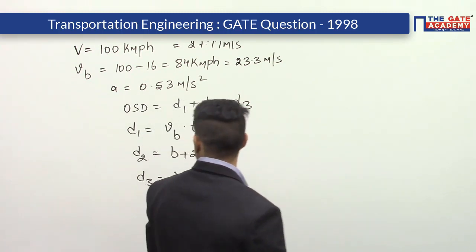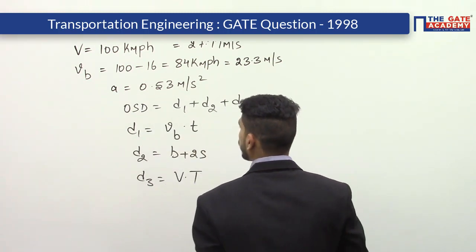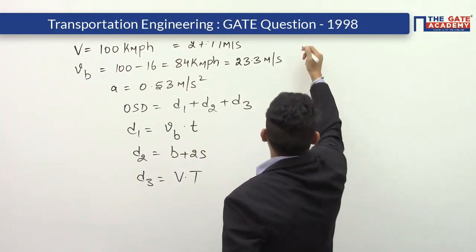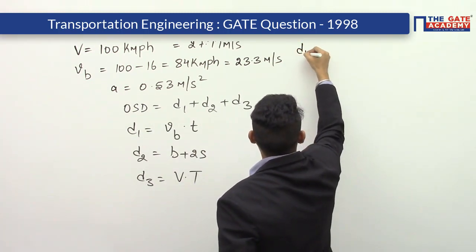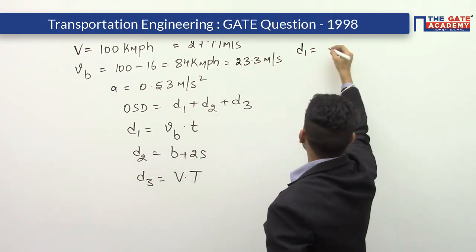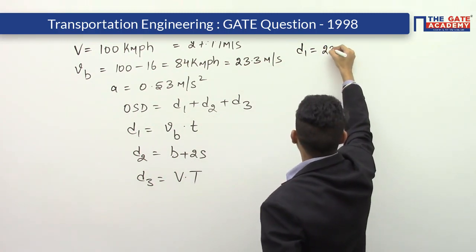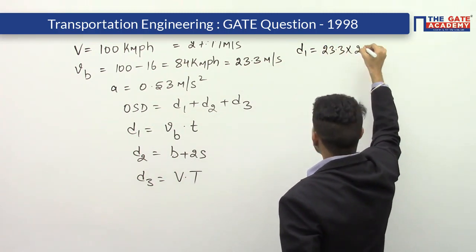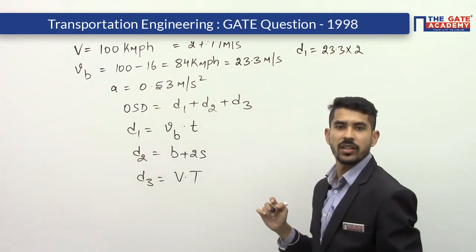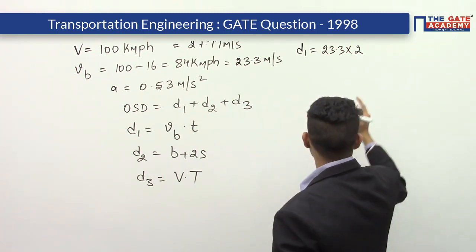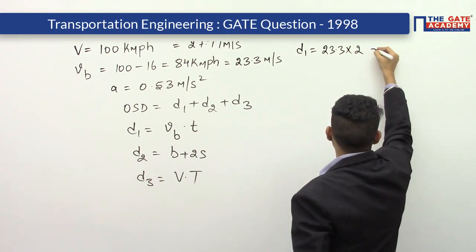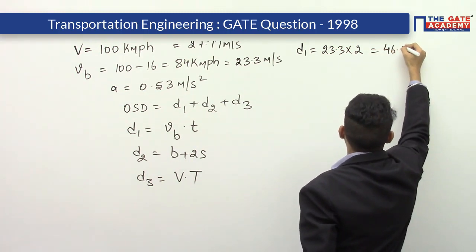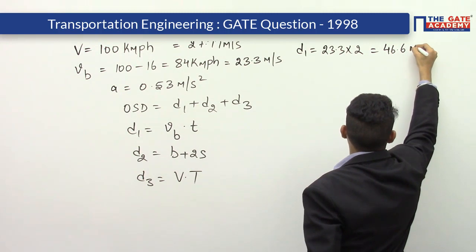Calculating d1: d1 equals vb into t, so d1 equals 23.3 into 2 seconds. The reaction time for overtaking sight distance is 2 seconds, so d1 comes out to be 46.6 meters.